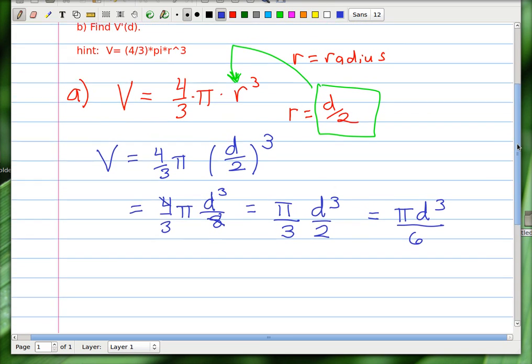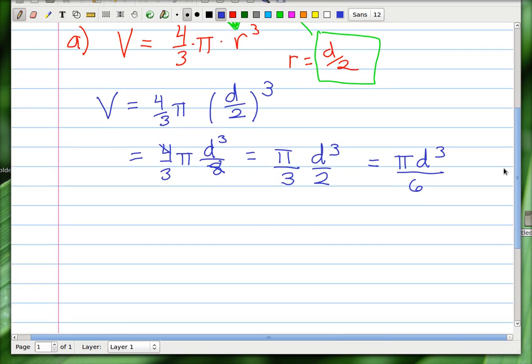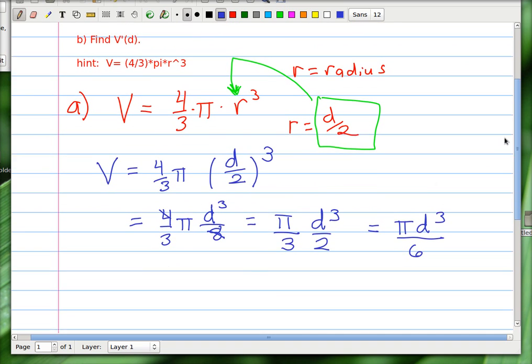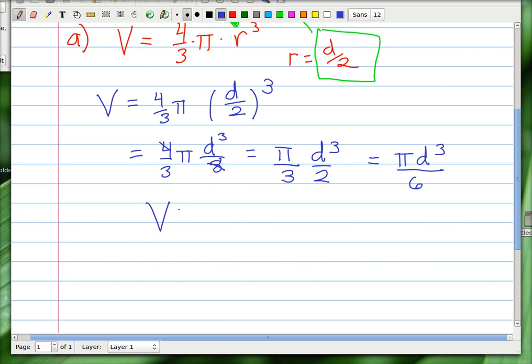And there's nothing special about that, but it's going to make it easier to do part b. So remember part b is to take the derivative. So it says actually V prime of d. So now we have V of d is equal to pi d cubed over 6.